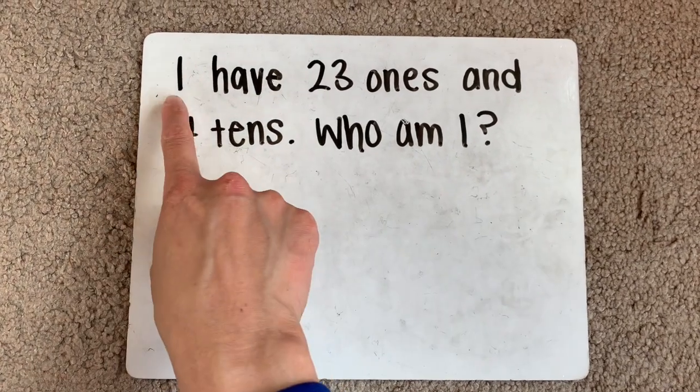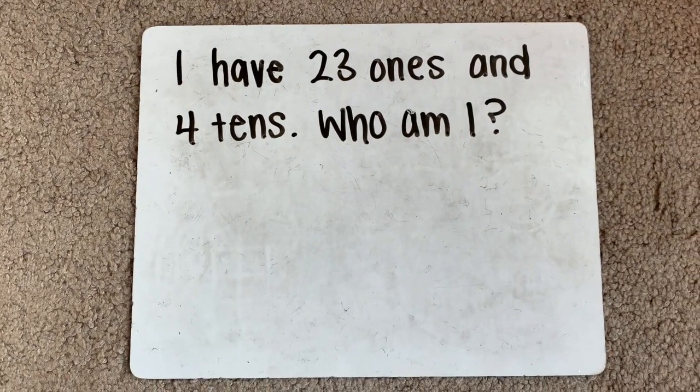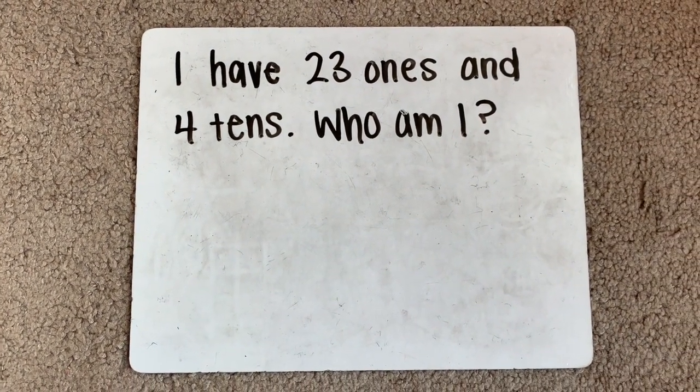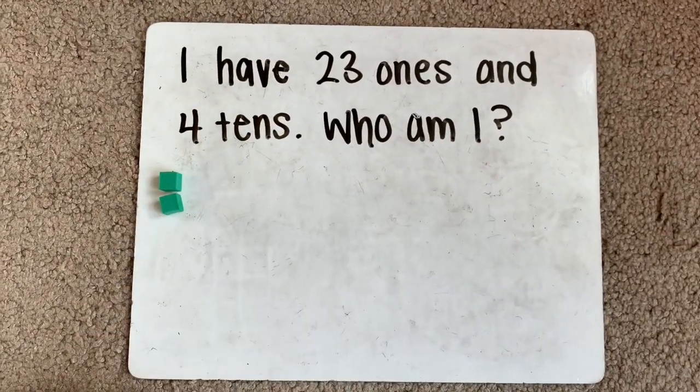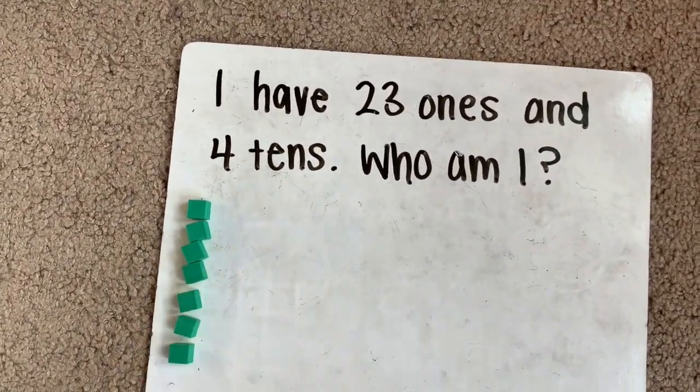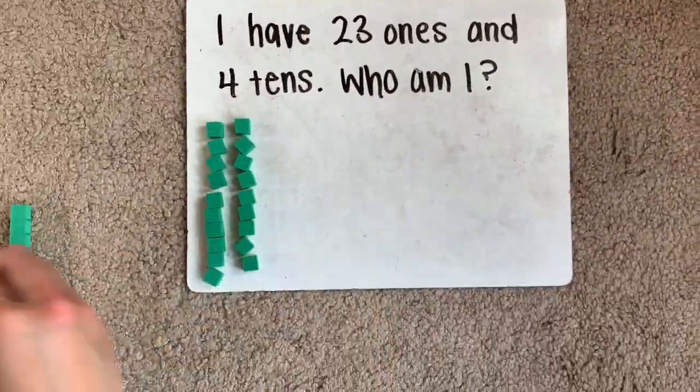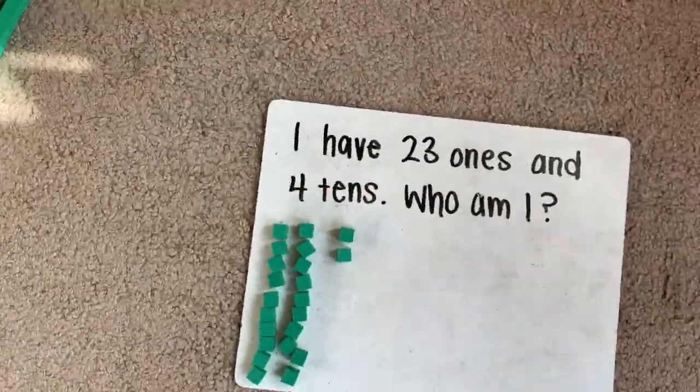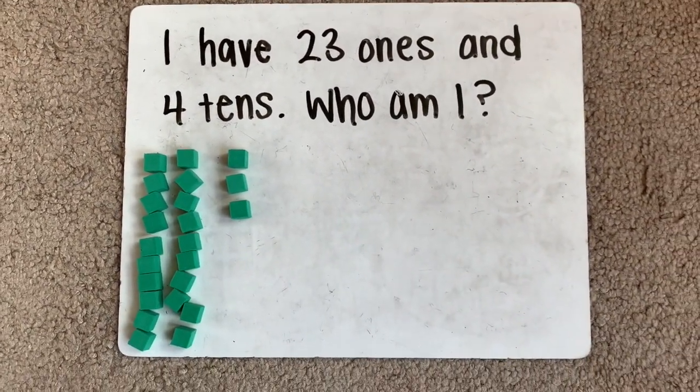This next one says, I have 23 ones and four tens. Who am I? So let's start with building our 23 ones. All right. I put out 23, but we can go ahead and count it together to make sure.